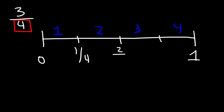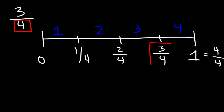Now at the first mark that's 1 over 4, the second mark is 2 over 4, the third one is 3 over 4, and 1 is the same as 4 over 4. So 3 over 4 is located right here — it should be placed at the third mark when you break the number line into four spaces.